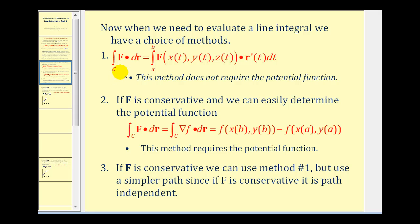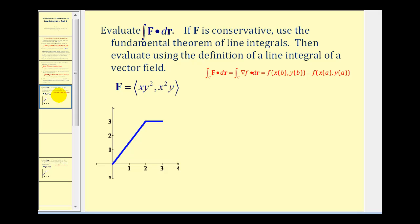To evaluate a line integral, we have a choice of methods. The first method requires us to parameterize the curve in terms of t, rewrite the vector field in terms of t, dot it with r prime of t, and integrate with respect to t. This method does not require the potential function. However, if C is conservative and we can easily determine the potential function, we could take advantage of the Fundamental Theorem of Line Integrals. The third option is, if f is conservative, we could use method one but use a much simpler path because the path would be independent. In this video, we'll take a look at one example and evaluate the line integral using all three of these methods.